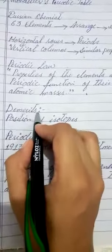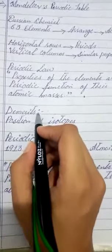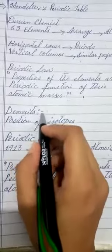Mendeleev's periodic table was the first-ever attempt to arrange the elements, yet it has a few demerits.